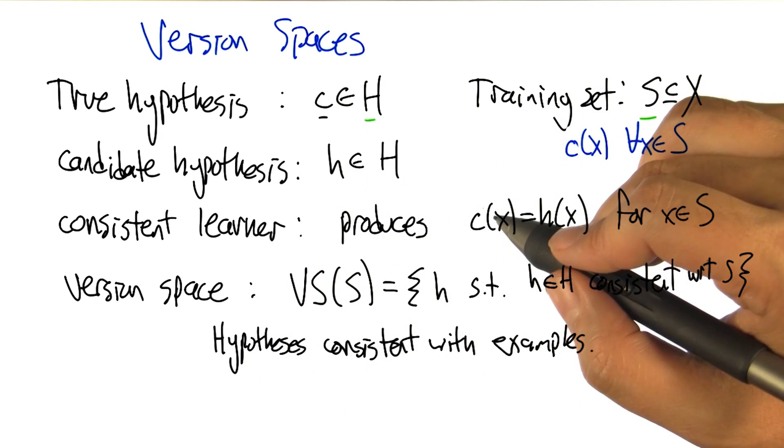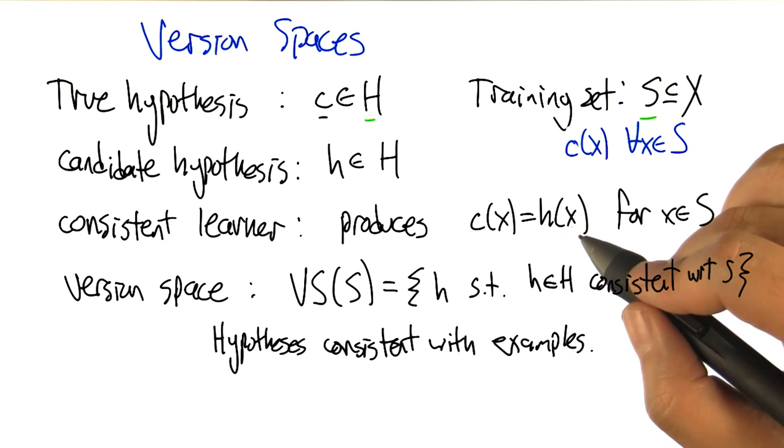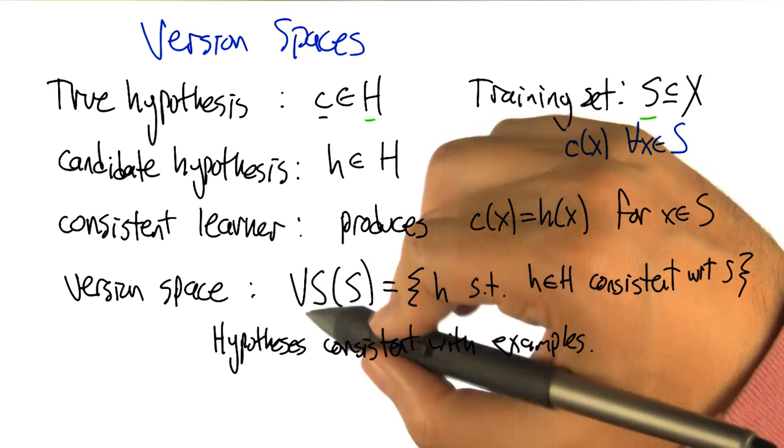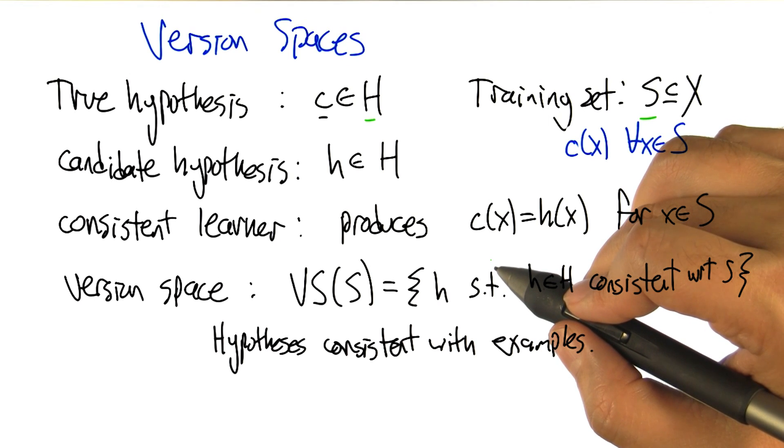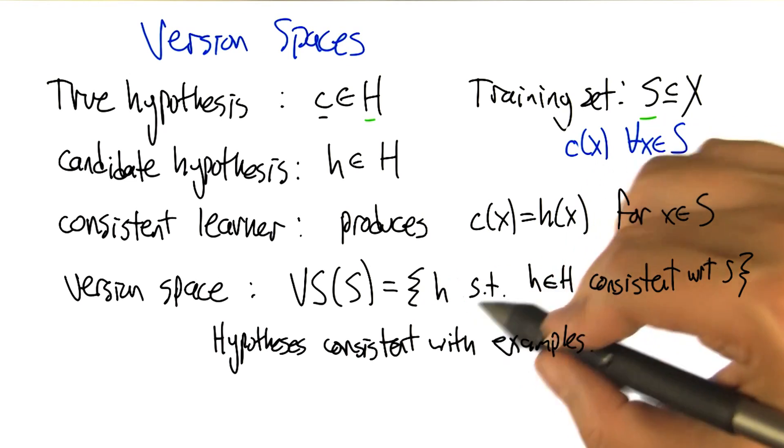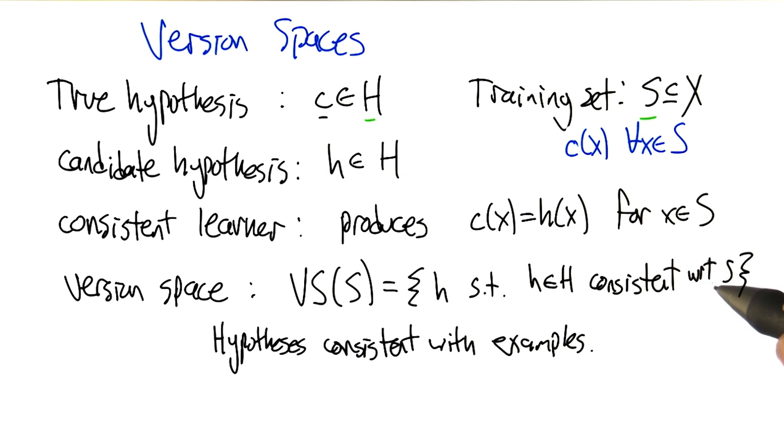Yeah, and the version space is essentially the space of all the hypotheses that are consistent with the data. So, we'll say the version space for a given set of data, S, is going to be the set of hypotheses that are in the hypothesis set, such that they're consistent with respect to the samples that they're given.